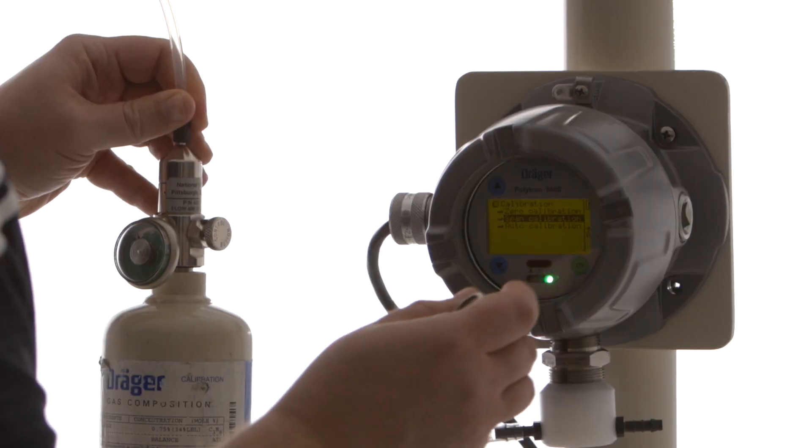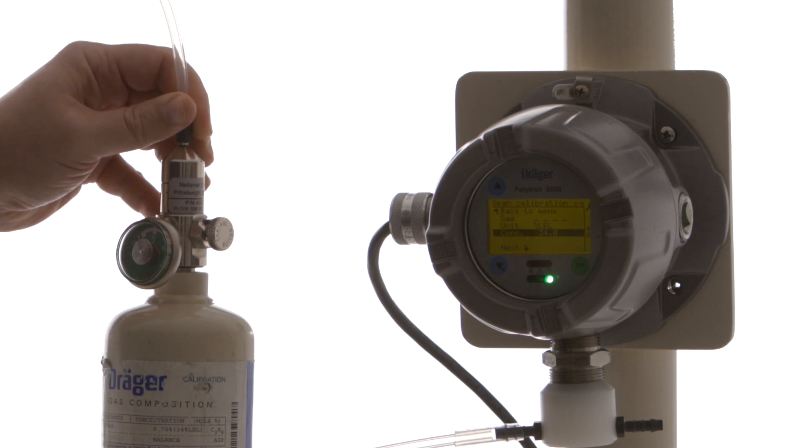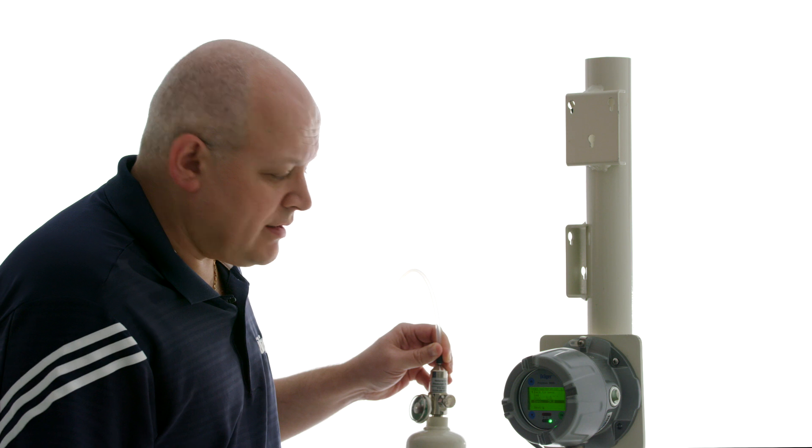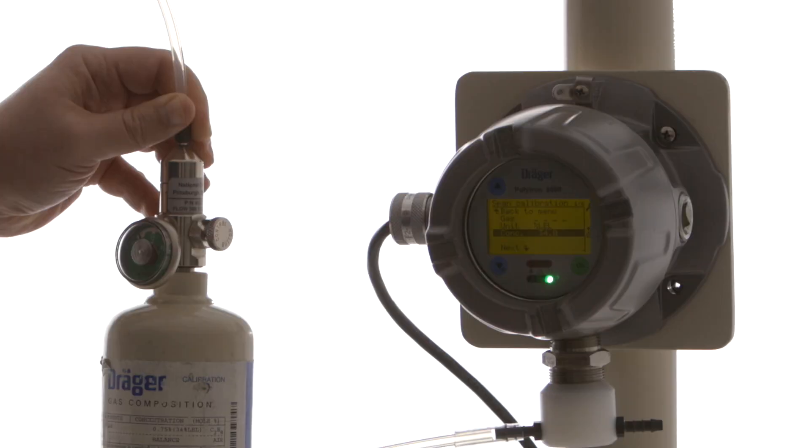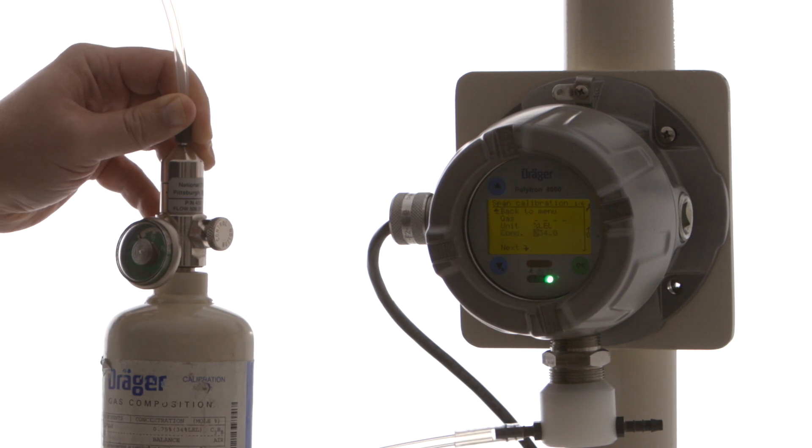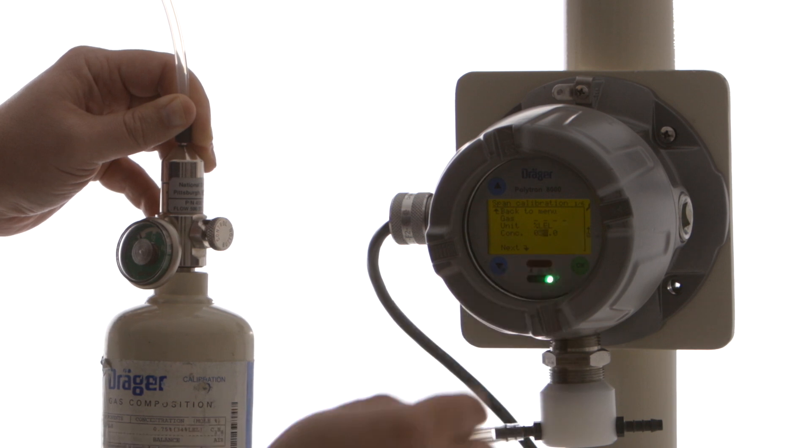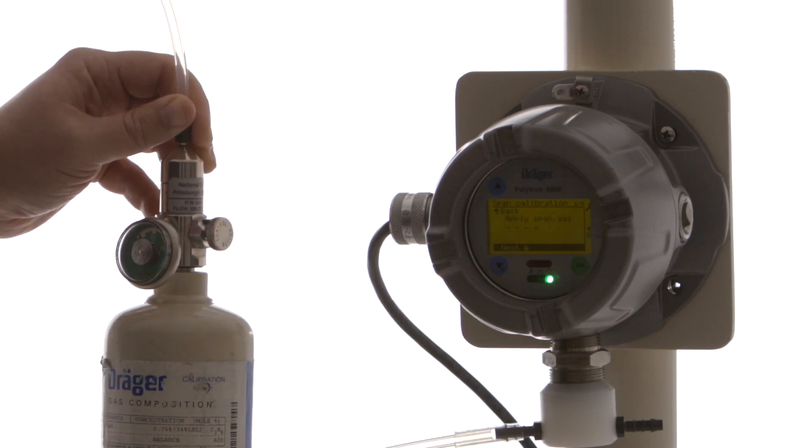And we're going to select span calibration. And we're going to tell it that we're calibrating with 34% LEL of a gas. It doesn't need to know which gas it is. It just needs to know the final value. And for us it's 34% LEL. If this wasn't already selected you can always touch the OK button and change that number to whatever your gas bottle says the concentration is. So right now we're going to go through the 34% LEL since that's what I have. Click OK.